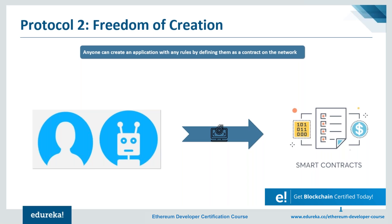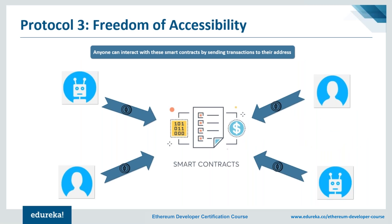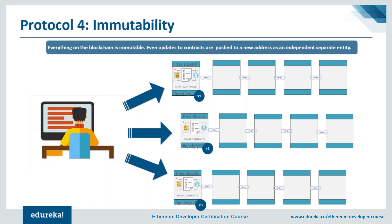The second protocol states that anyone can create any application on the network with any rules by defining it as a contract. The third protocol states that anyone can interact with these smart contracts by sending them transactions — this allows smart contracts to interact with each other. For example, a property sale application on Ethereum could send a transaction to an identity verification smart contract on the same network. Through smart contracts communicating this way, many services can be tied together and the marketplace can truly be decentralized.